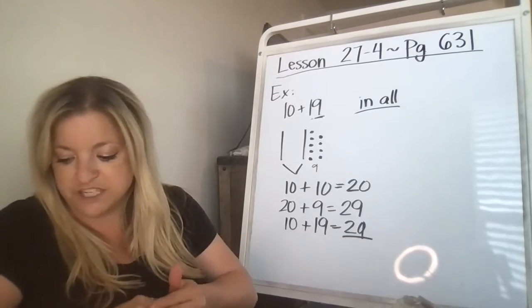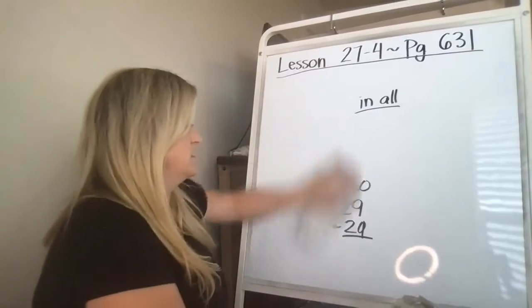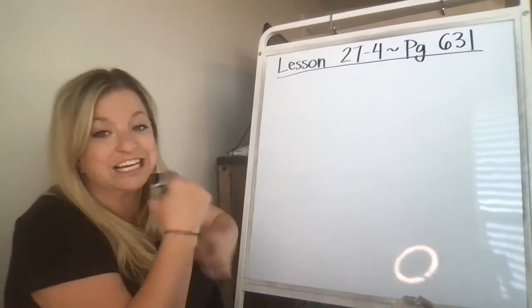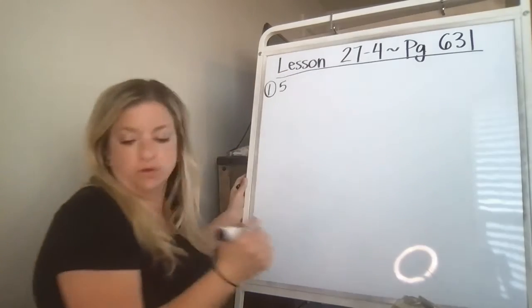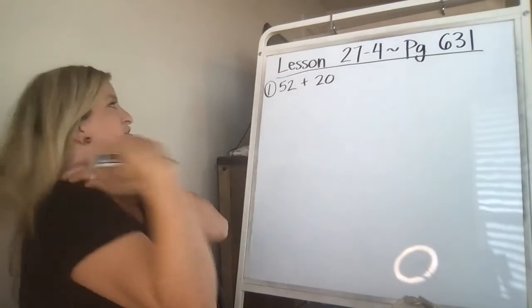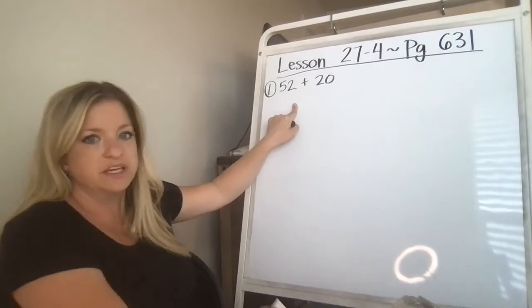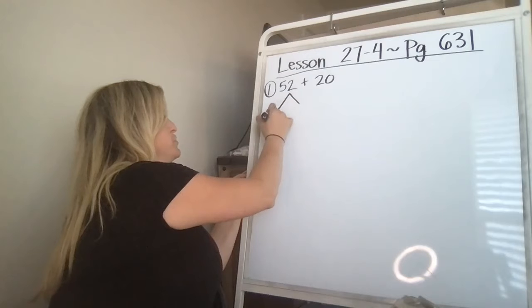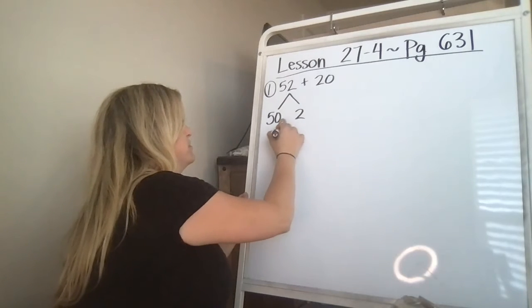Number one, find 52 plus 20. So these, you can do whichever strategy works best for you. I think the harder one is going to be the one with the number bond, so I'm going to go ahead and show you how to solve it using that and the other strategies. So here they put the number with the ones in front. We're still going to break it out, we're going to break 52 into 50 and then it becomes 50.